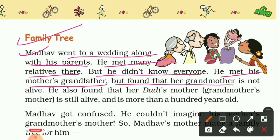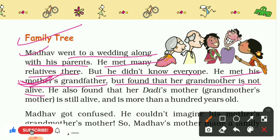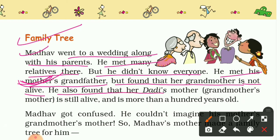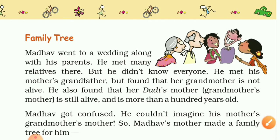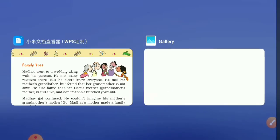Now, he met his mother's grandfather, but found that his grandmother is not alive — so mother's grandfather is alive but grandmother is not. He also found that his dadi's mother, meaning his grandmother's mother, is still alive and she is more than a hundred years old. So yes, it's a very confusing relation.